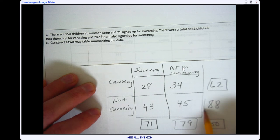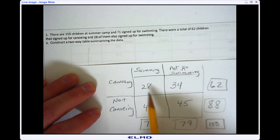So remember, my marginal frequency is what all these columns and rows add up to. So I know there were 71 swimmers, 62 people going canoeing. There were 28 people that did both. There were 45 campers that chose not to go swimming or canoeing. And there's 150 total campers at the site.